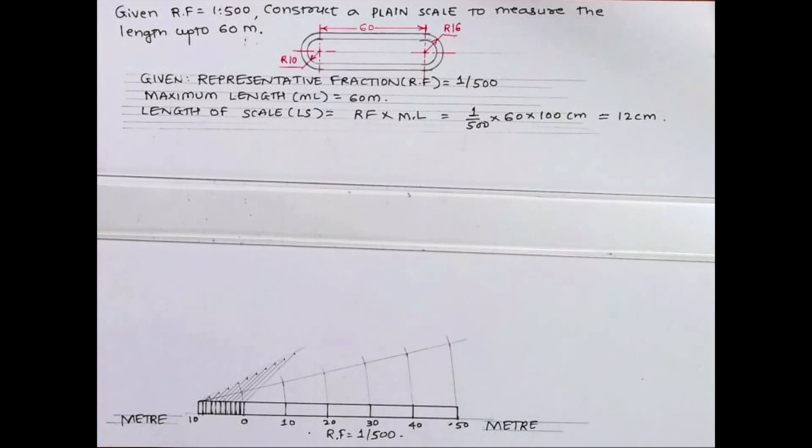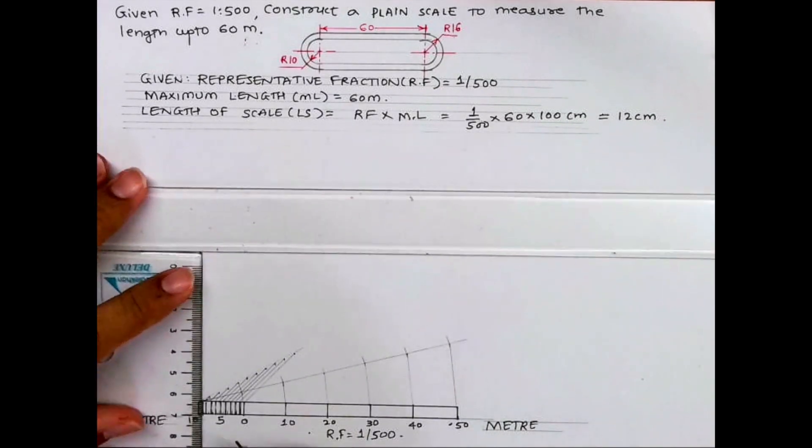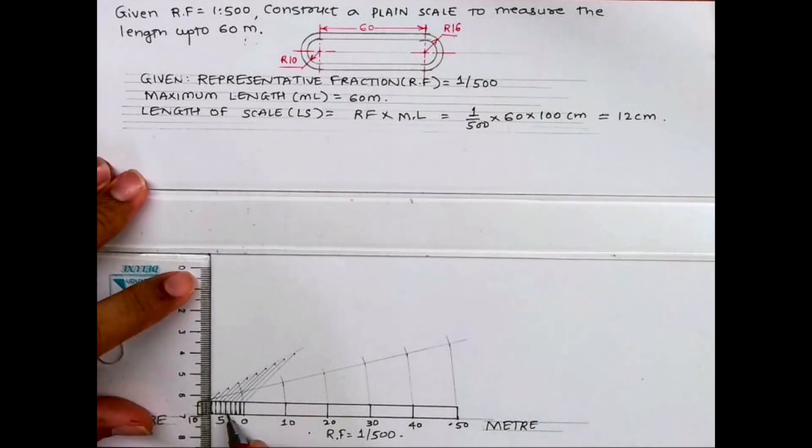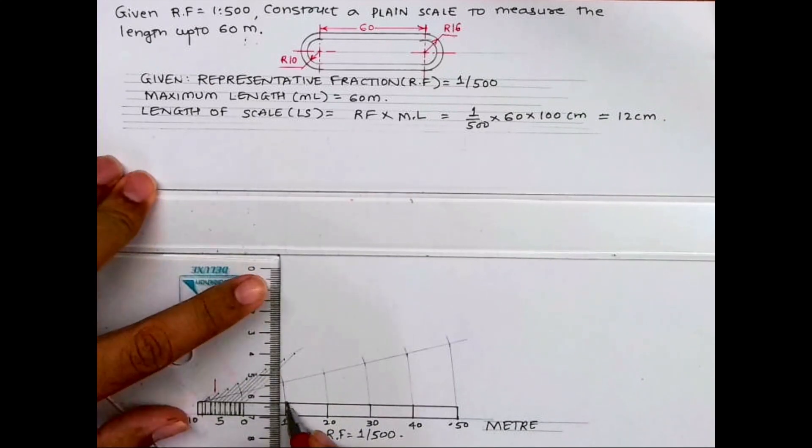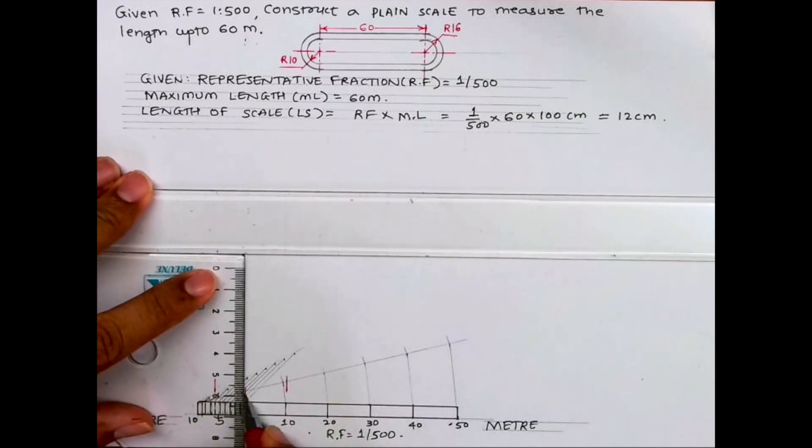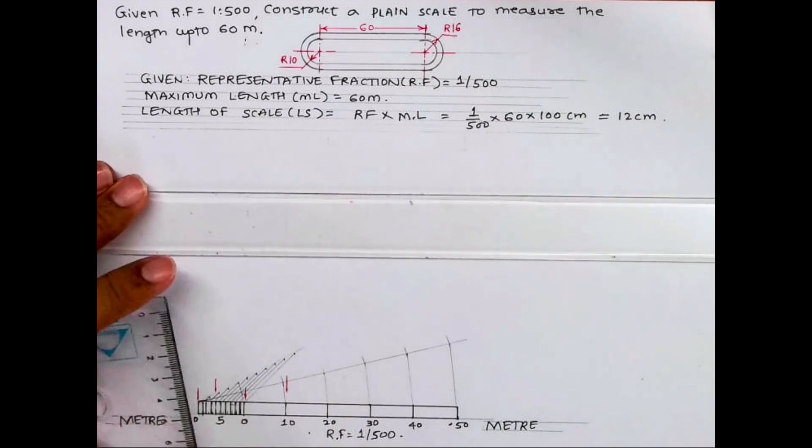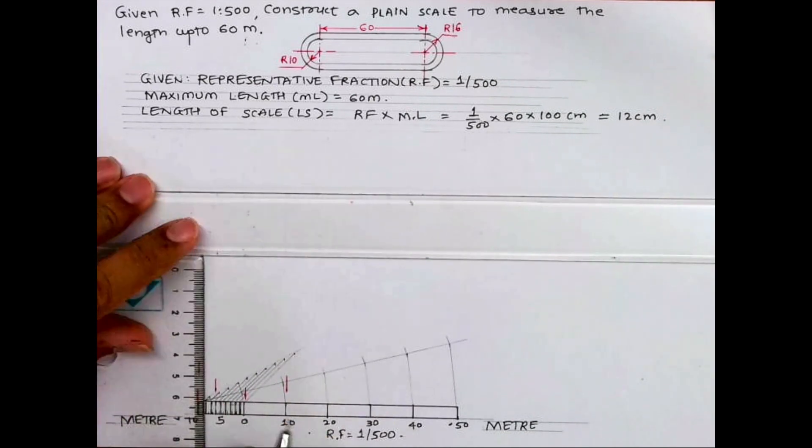After this, we need to mark 10, 16, and 60 meters on the scale. We'll take 10 from here, 6 from here, so we can mark 16. Then we can mark directly like this, and 60 is the total length.